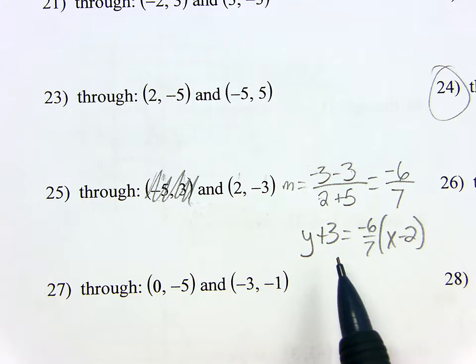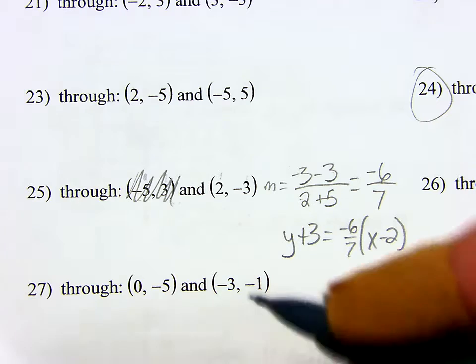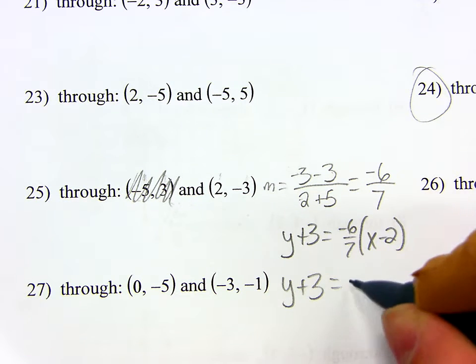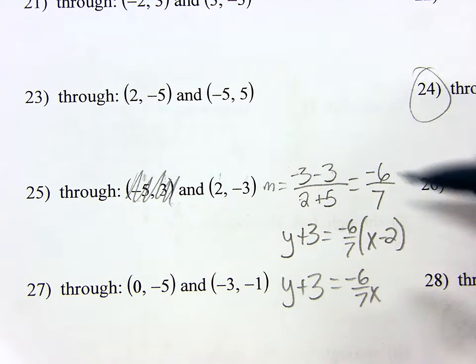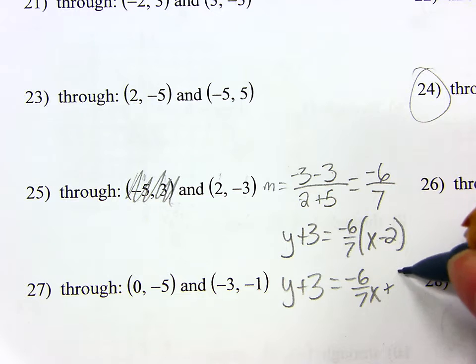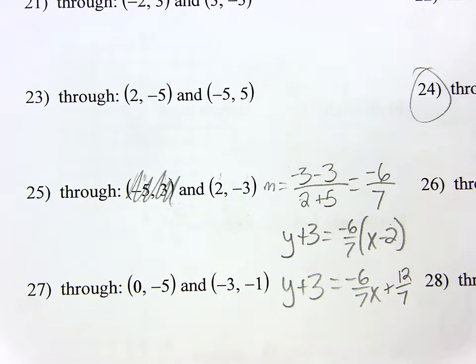I can't leave it like this, unfortunately, because they're asking me for slope-intercept form. So, I have to distribute that negative 6 sevenths. So, minus 6 sevenths X. And now, what is that when I multiply this times this? Positive 12 sevenths. You got it.